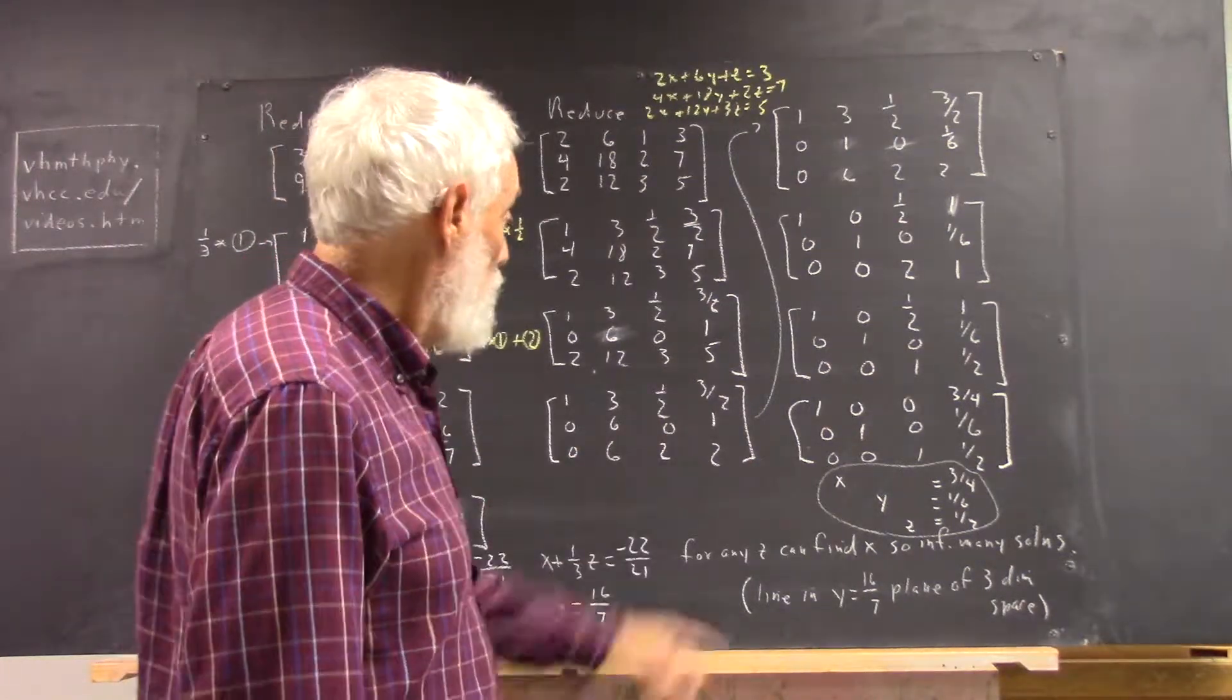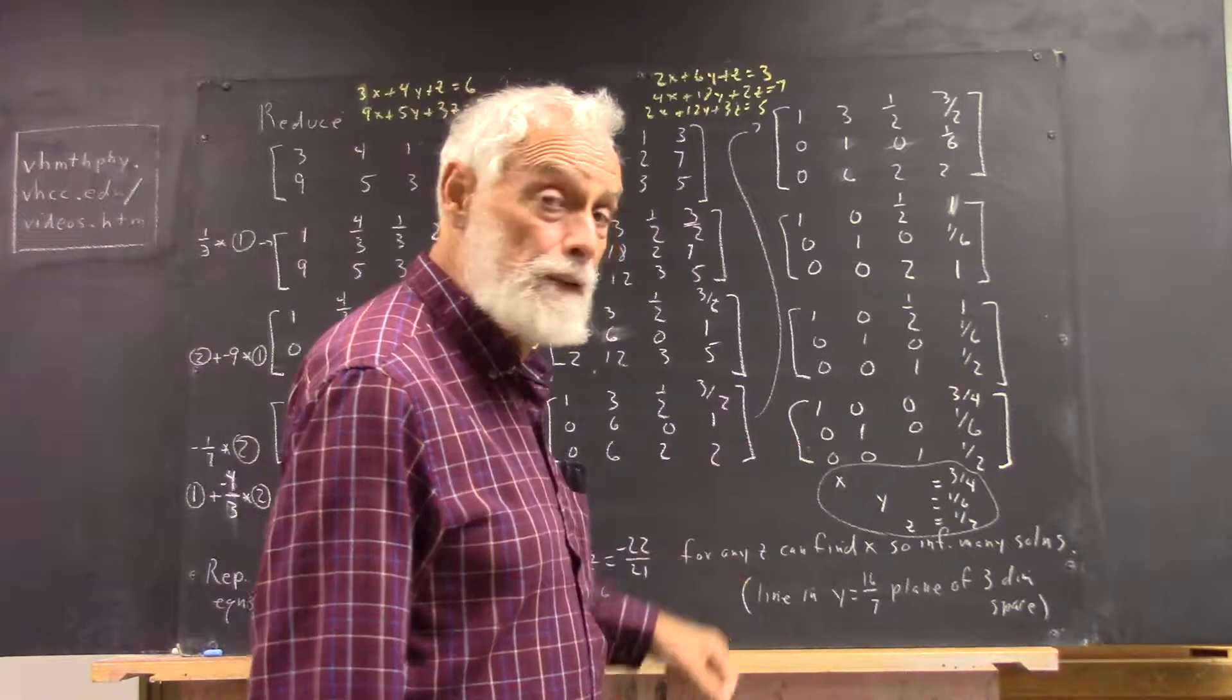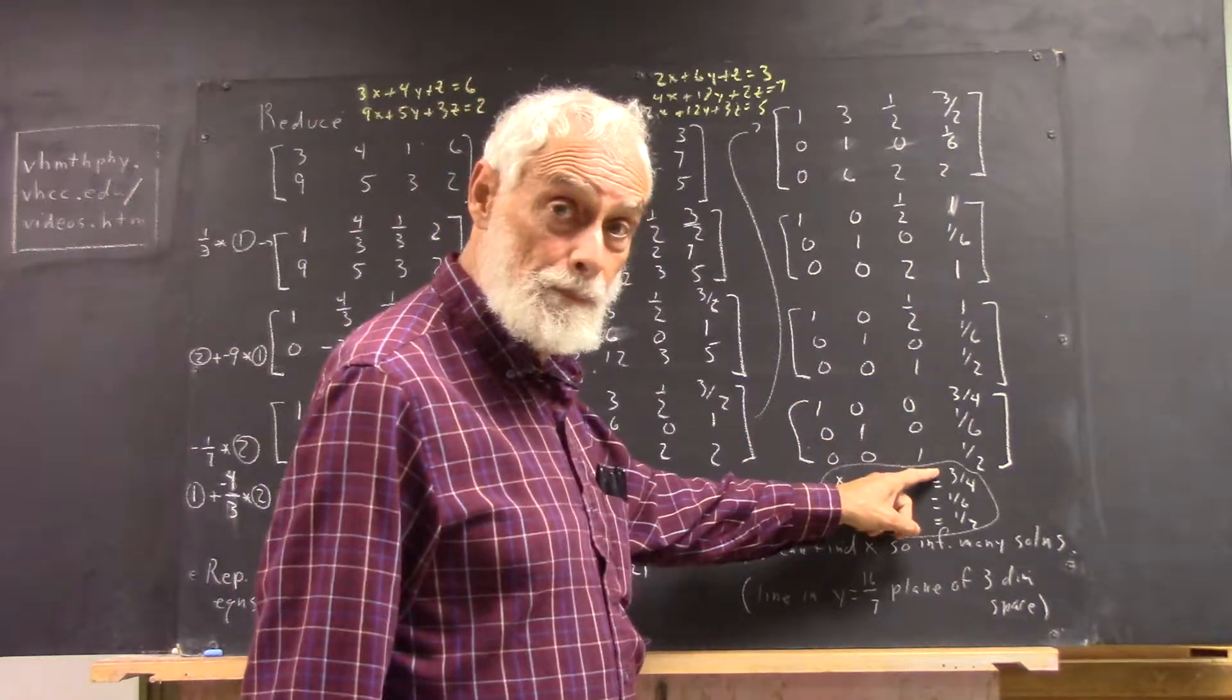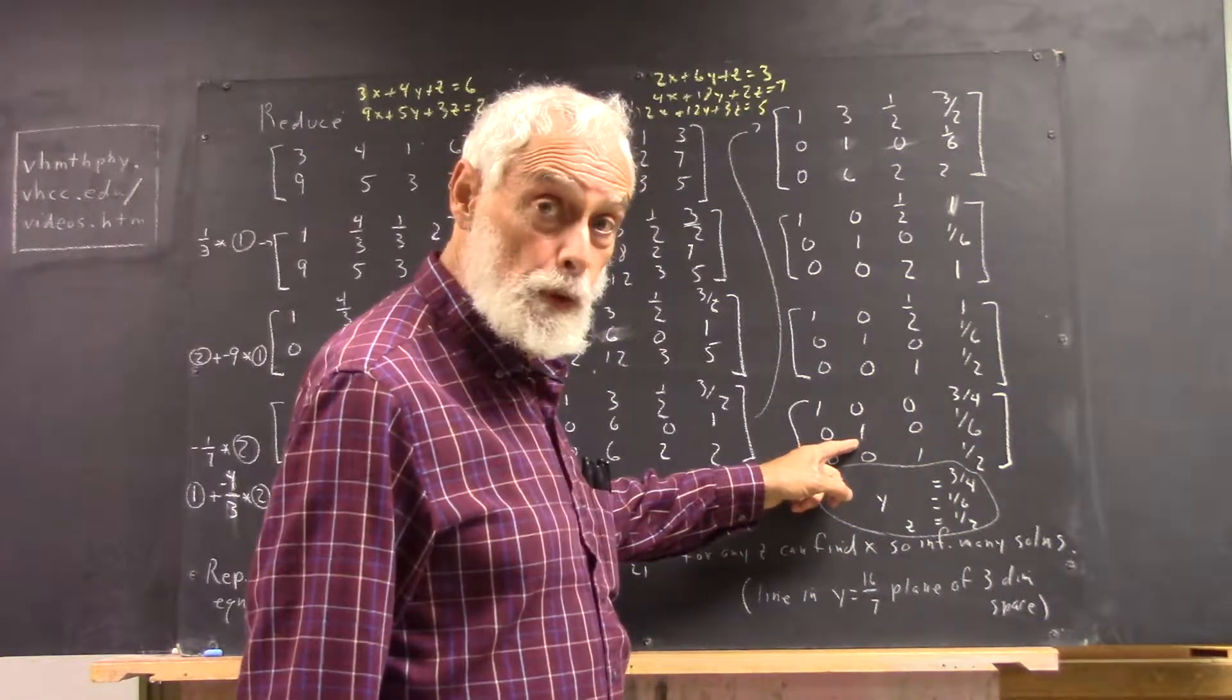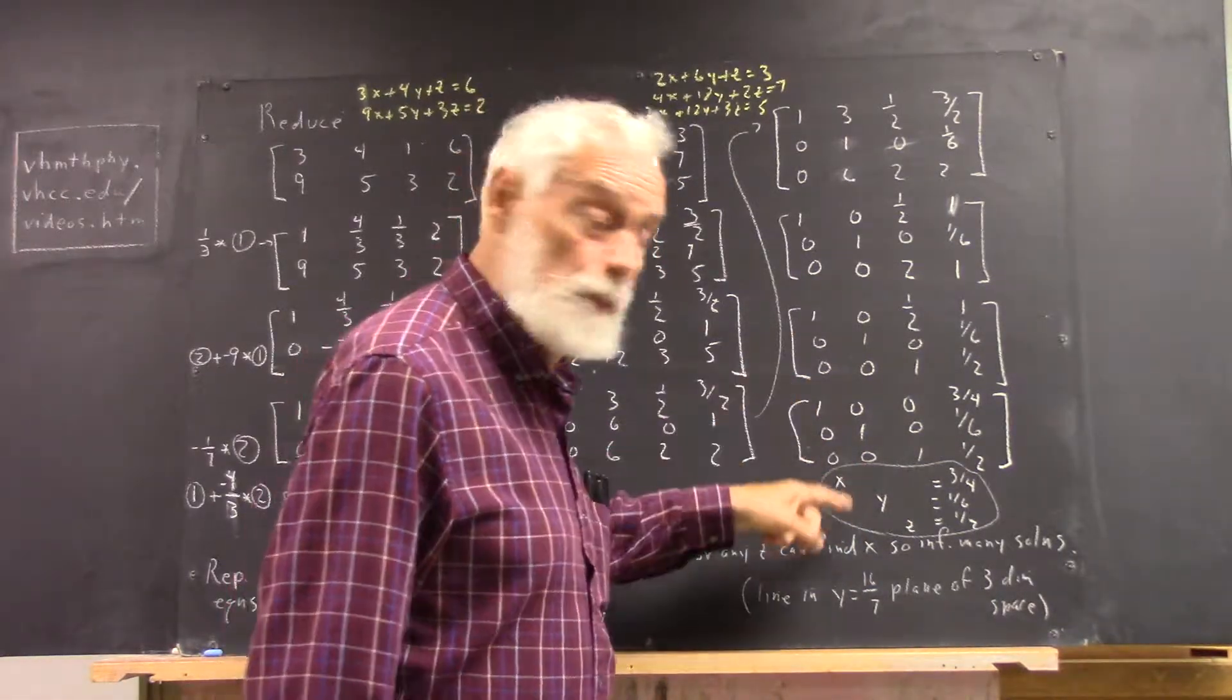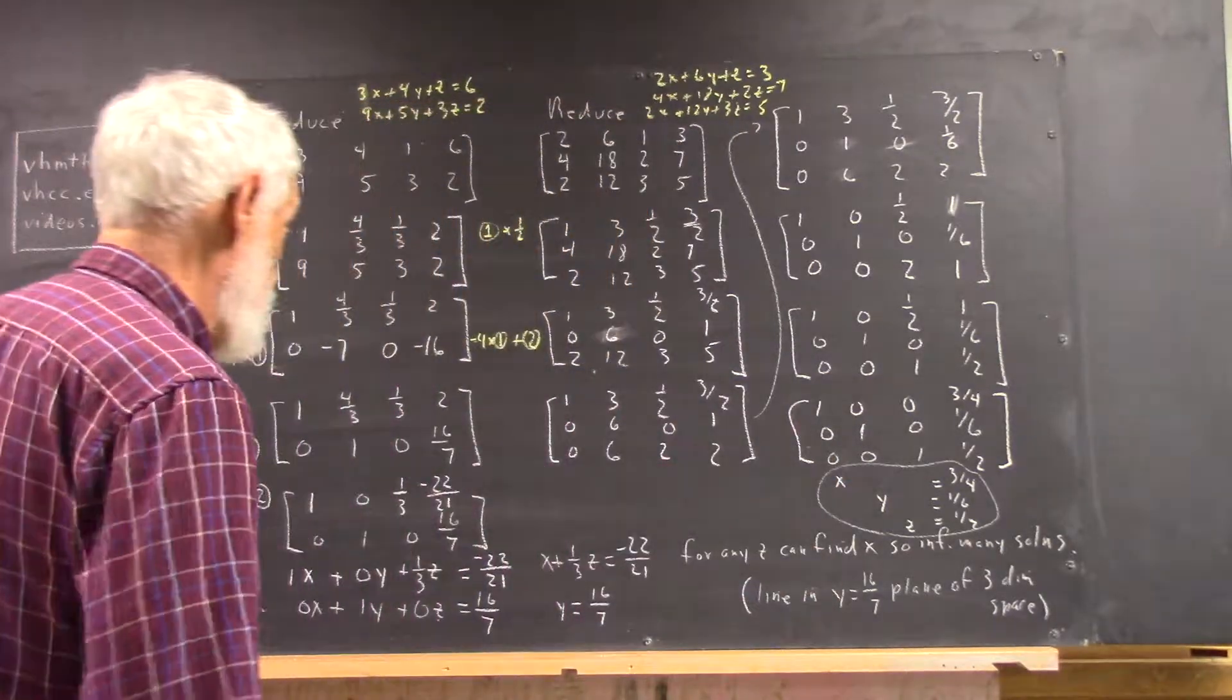If we think about what we're trying to get, well, we're trying to get the identity. We're trying to get 1, 0, 0, 0, 1, 0, 0, 0, 1. It would not have hurt to get the 1 here. But let's go ahead and take care of the whole column before we move to the second column. That's what I recommend.